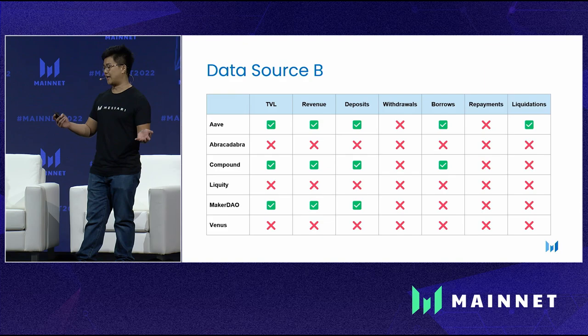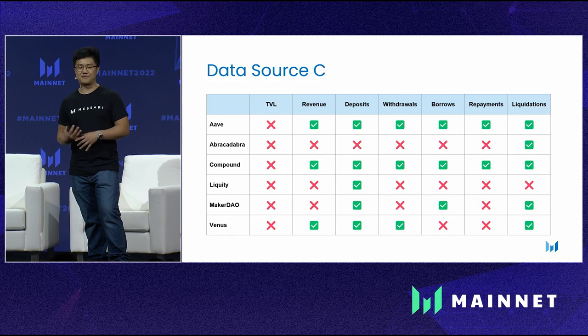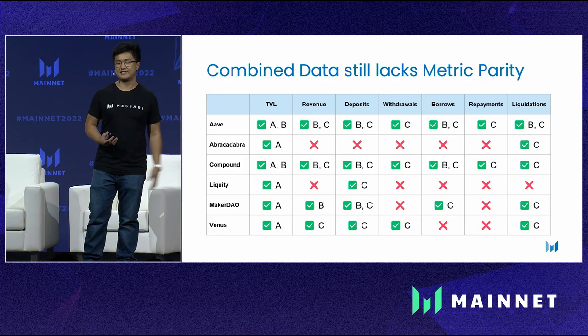So she looks for another data source and finds data source C. Data source C has no TVL data, but it has good revenue and transactional data she's interested in. Again, there's good support for Aave and Compound, but lots of gaps for Abracadabra and the other protocols she's interested in. She's now looked at three different data sources and needs to stitch them together.